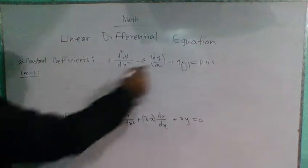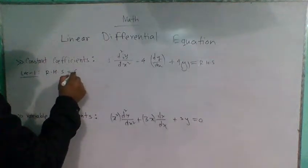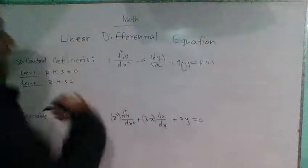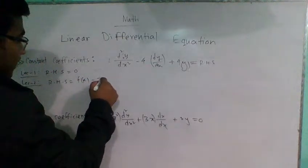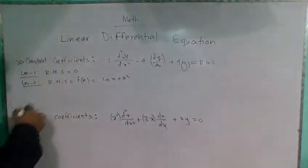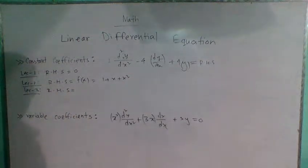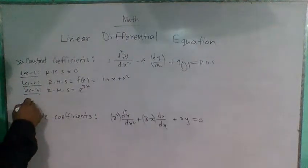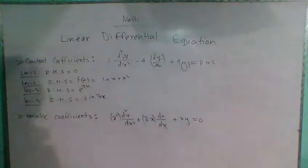We have chapter 1 covering all right-hand side cases. The linear differential equation with constant coefficient where the right-hand side is equal to 0. In lecture 3, we will do the constant coefficient where the right-hand side is not equal to 0 — the right-hand side is an exponential function, for example e to the power 3x. In lecture 4, the right-hand side will be a trigonometric function — sin, cos, tan.